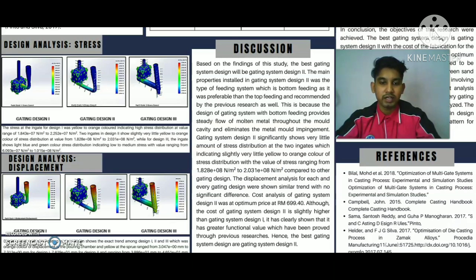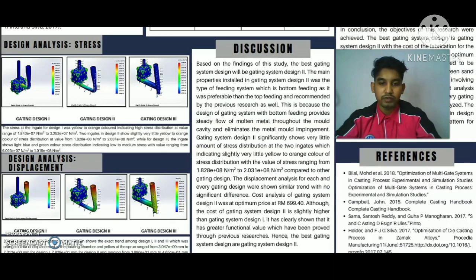Gating system design 2 significantly shows a very small amount of stress distribution at the two in-gates, indicating slightly very little yellow to orange color of stress distribution with the value ranging from 1,828 N/m² to 2,031 N/m², compared to other gating system designs. The displacement analysis for each gating design showed a similar trend with no significant difference.